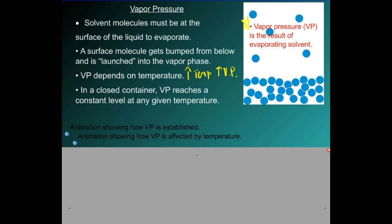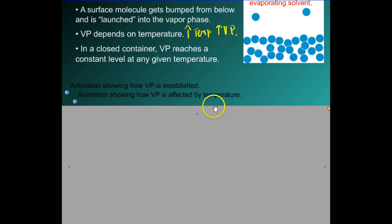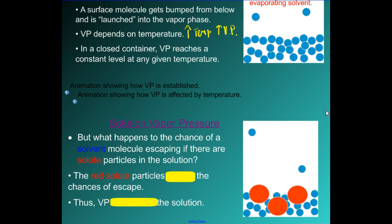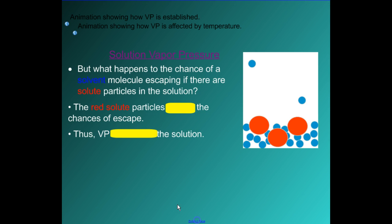Let's go ahead and continue here by looking at the vapor pressure of not a pure solvent. In this case it was a pure solvent, just water, just acetone, just some other liquid. Now we want to look at more specifically what if it is a solution vapor pressure.